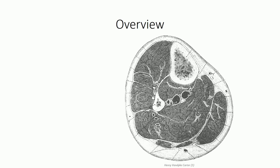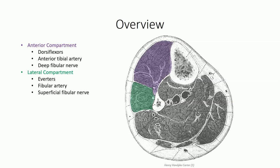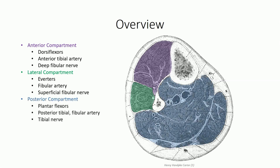As with the thigh, the leg can be divided into three separate compartments. In the next session we'll be talking about the anterior and lateral compartments. The anterior compartment contains the muscles responsible for dorsiflexion and toe extension, and can also assist in foot inversion. It is supplied by the anterior tibial artery and innervated by the deep fibular nerve. The lateral compartment contains the muscles responsible for ankle eversion, which also assist in plantar flexion. It receives its blood supply from the fibular artery and is innervated by the superficial fibular nerve.